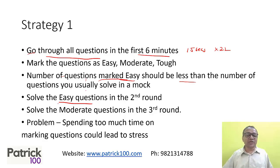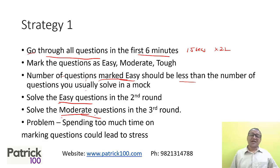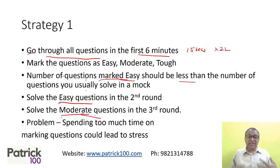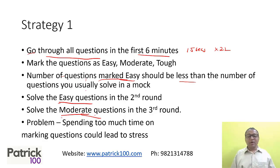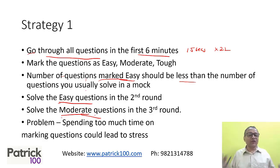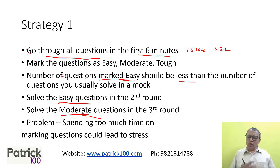In the second round, solve the easy questions. In the third round, solve the moderate level questions — whatever you've marked. The problem with this strategy is that when people spend too much time in the first six minutes, they get stressed: 'Six minutes have passed and I haven't solved a single question.' If you can manage the stress, this strategy is really good. I would still recommend following the strategy for a few mocks because it helps you learn to leave questions and manage your strategy.